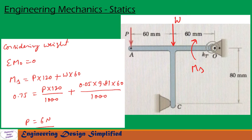Let us consider Case A, where the weight of the T-section is considered. The weight will be acting vertically downwards along this leg, so the center of gravity must be lying somewhere on this leg. The weight is acting vertically downwards at a distance of 60 mm from O.